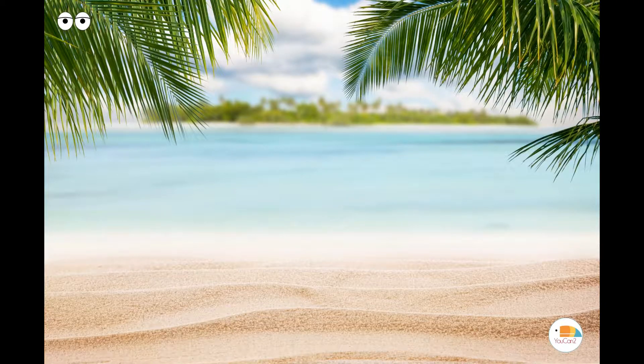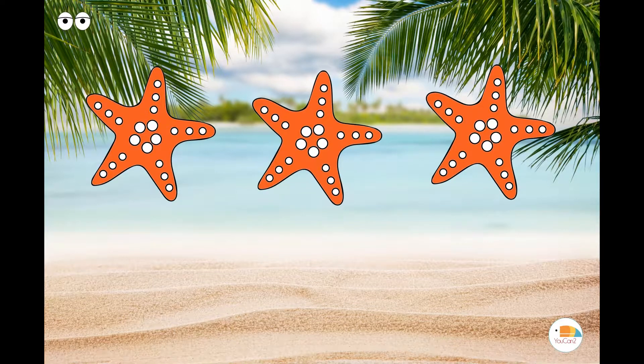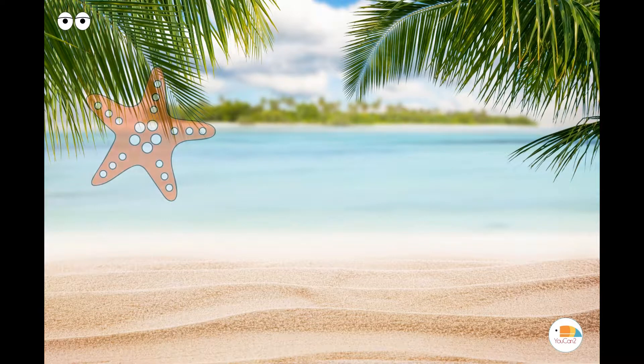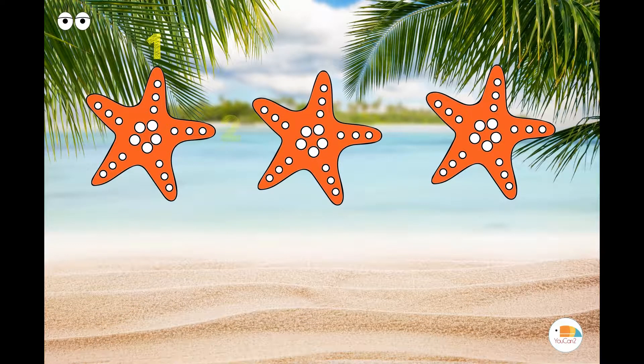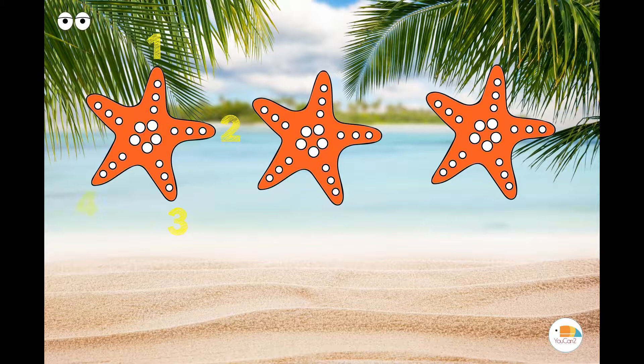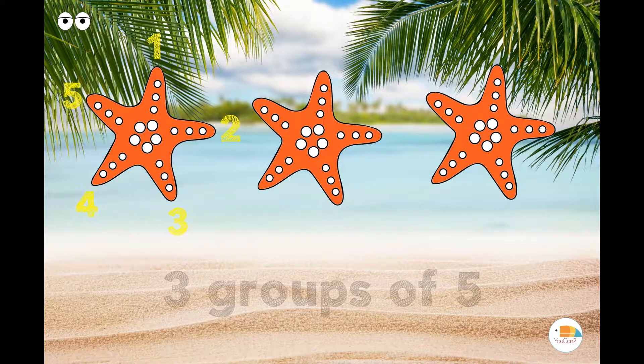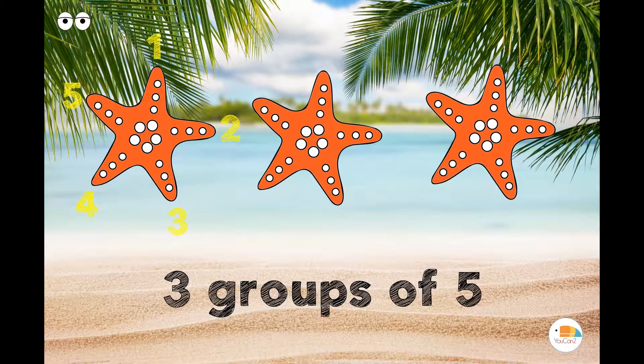The beach! What are you looking for Toucan? Equal groups at the beach? Oh hey, you were right, check it out. Three starfish. Those are equal groups. One, two, three starfish with one, two, three, four, five points. Three groups of five.